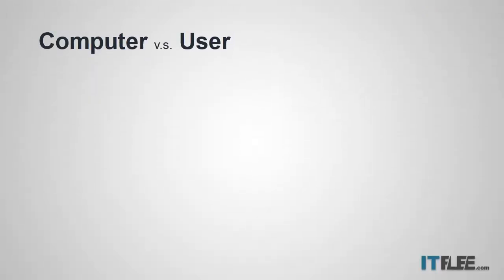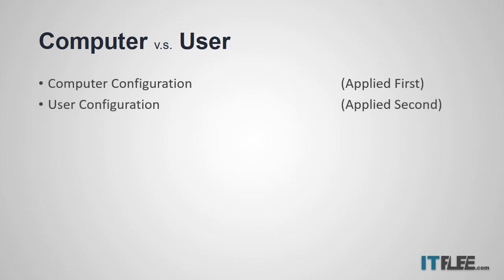Now we have to consider computer versus user. Within a GPO, you have a computer configuration and a user configuration. The computer configuration is applied first, and the user configuration is applied second. Since the settings applied last are the ones that win, if you have conflicting settings between your computer and user configuration, the user configuration will win that battle. So the computer configuration is the least important, and the user configuration is the most important.